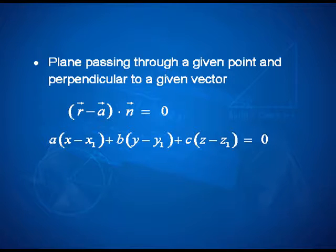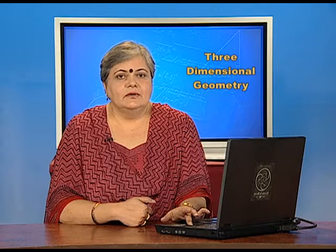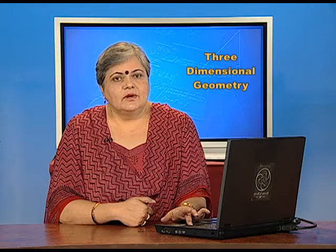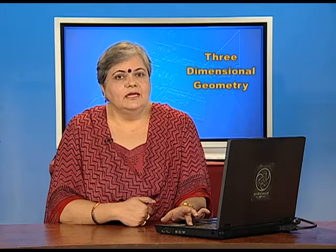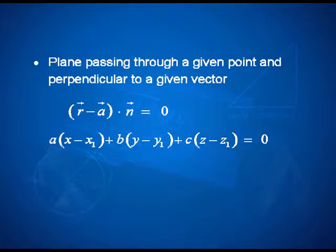Here a, b, c are the direction ratios of the normal, and x1, y1, z1 are the coordinates of a known point on the plane. In Cartesian this becomes a times (x minus x1) plus b times (y minus y1) plus c times (z minus z1) equal to 0. If you rewrite this equation it gives rise to a linear equation in x, y, and z.